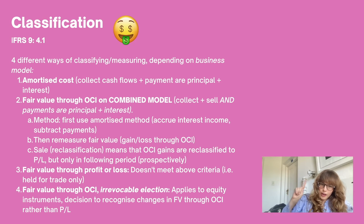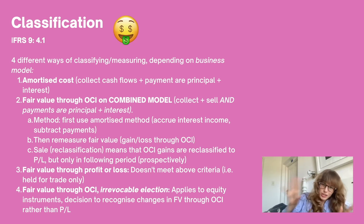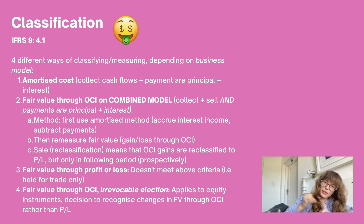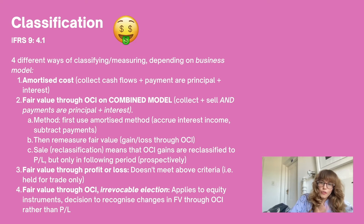The first measurement method is amortized cost. We've seen amortized cost before with financial liabilities — using an amortization table where you accrue interest, subtract payments, and get your net carrying amount. Same principle here, except we accrue interest income and deduct payments we will receive, which are the contractual cash flows. A financial asset will be measured at amortized cost when the business model is to collect cash flows only, and those cash flows consist solely of principal and interest.